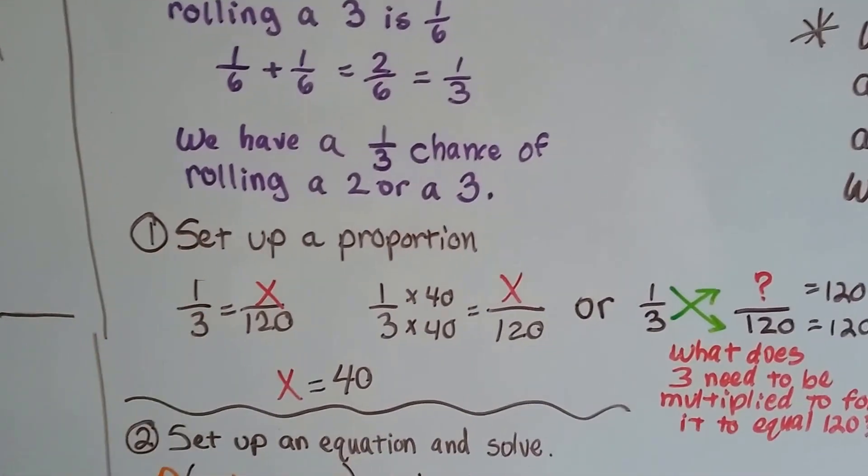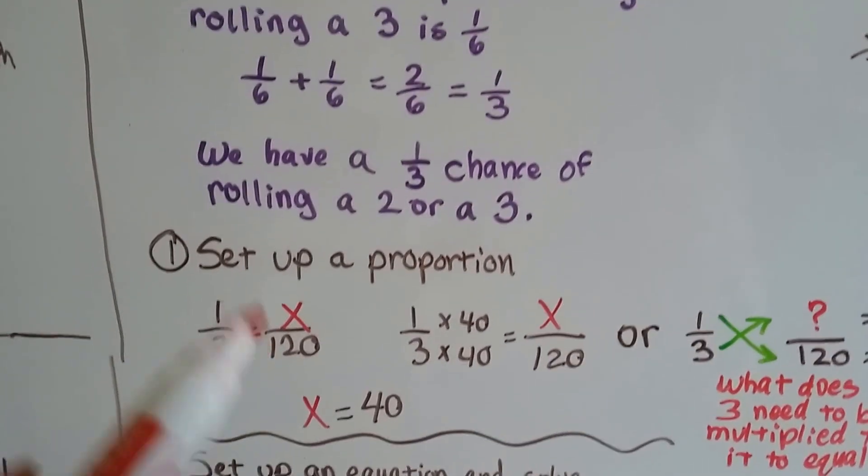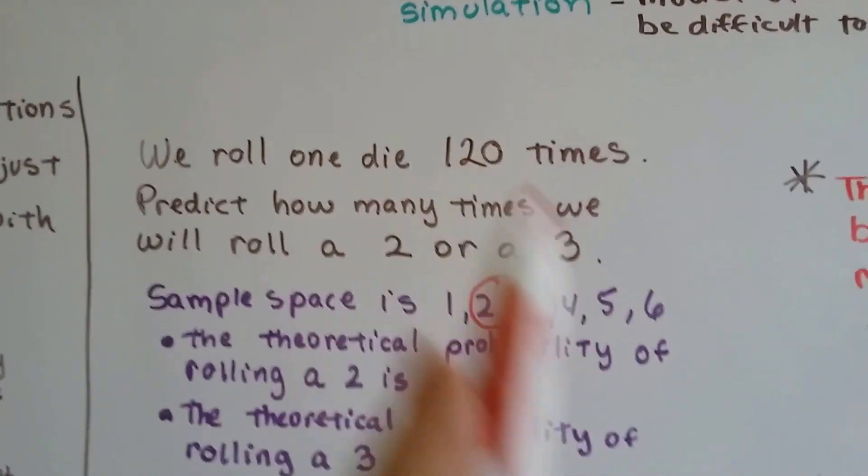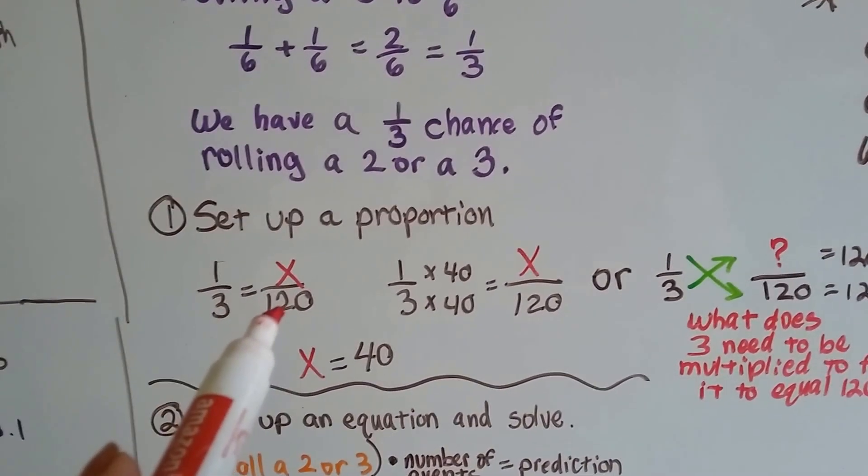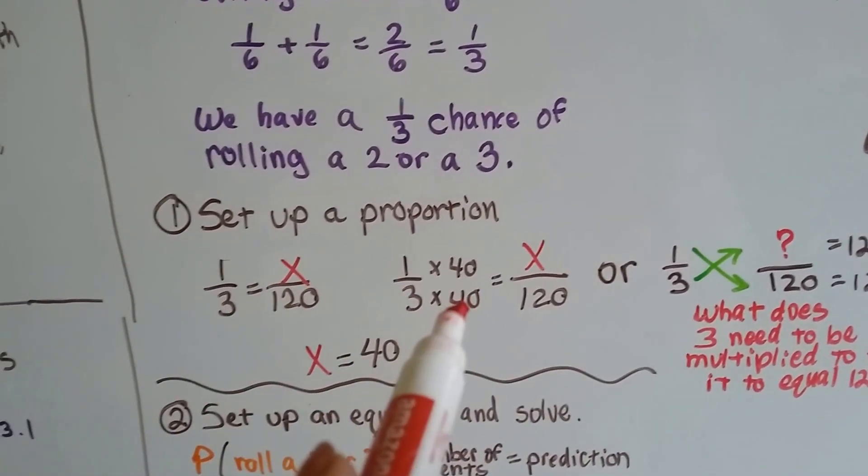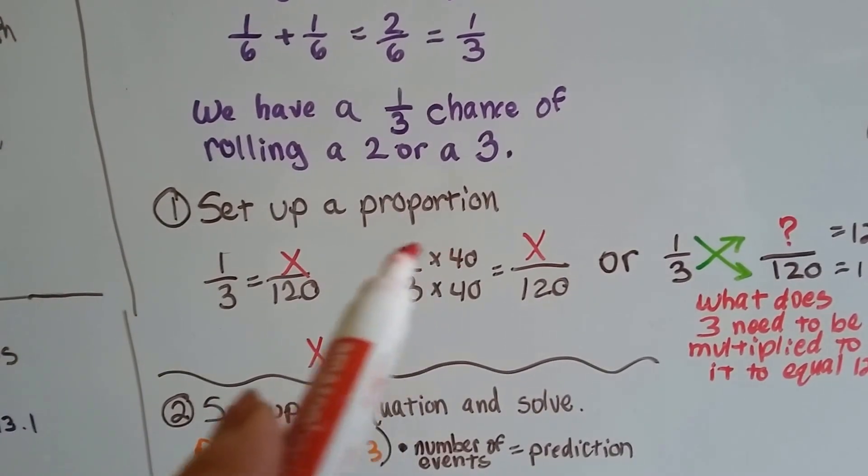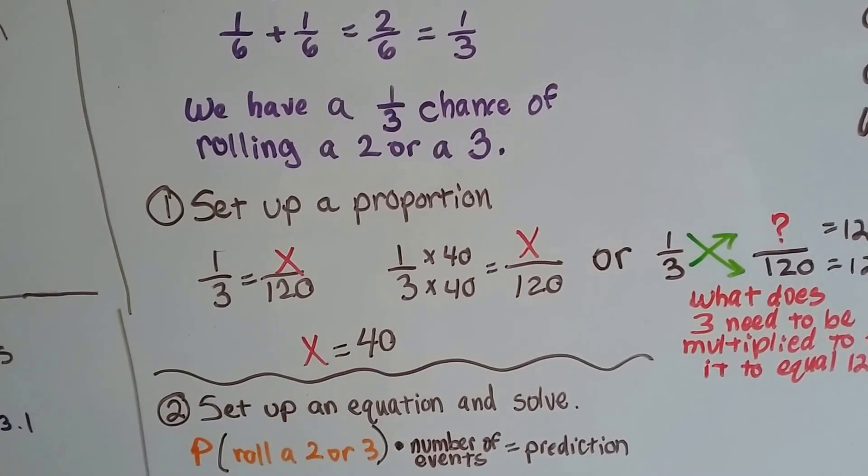So we can set up a proportion. That's the first method. 1 third is equal to x over 120, because we rolled it 120 times. So what does the 3 need to become 120? It needs to be multiplied by 40. So the 1 gets multiplied by 40, and we end up with x is equal to 40.